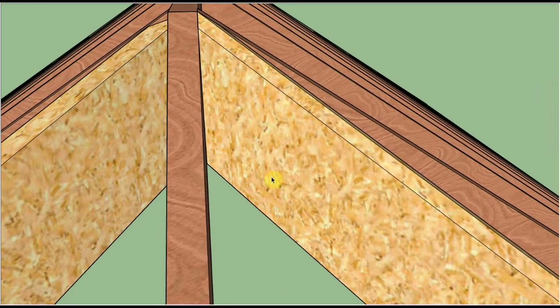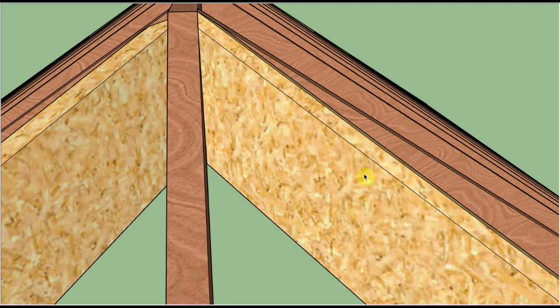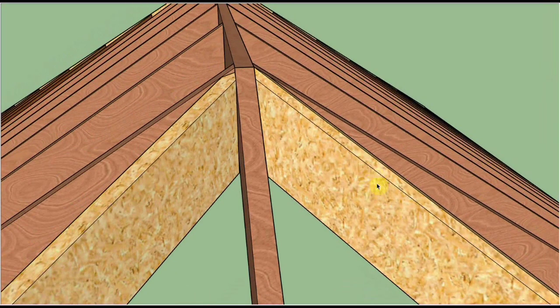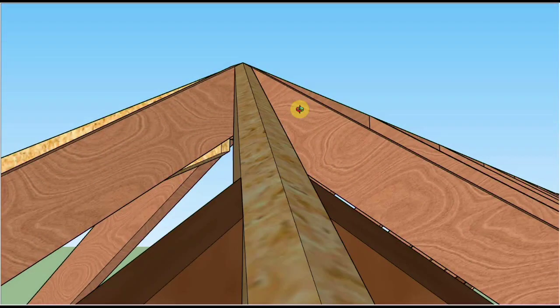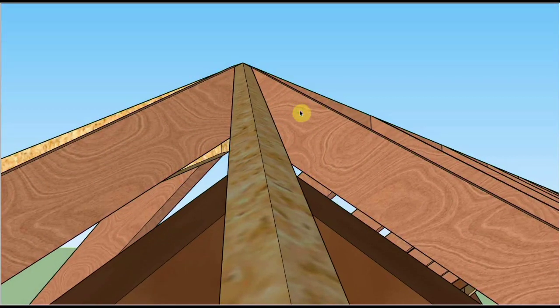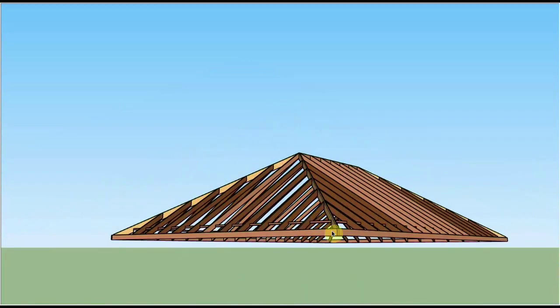Over here to the right is a hip rafter that instead of dropping it, we've beveled the top edge on each side of the center line so that it's perfectly in plane with the common rafters to each side of it. This is called backing a hip rafter.